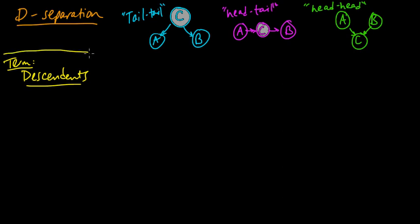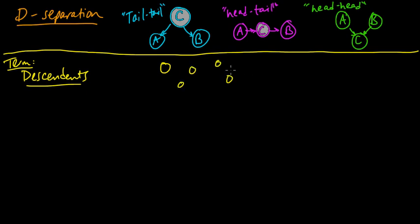The descendants of a vertex in a directed graph — usually in a DAG, a directed acyclic graph — are all those vertices that can be reached from that vertex by following edges in the direction in which they are pointing. So all the descendants of this node would be this one, this one, and this one, and so forth.